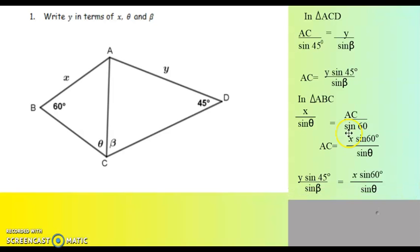So my next step, because AC is equal to AC, it's the same line. So that means that this is equal to this over here. Now I compare the two to each other. And I'm going to write y as the subject of the formula. So here I will multiply with sine of beta over sine of 45 to get rid of both of these. And whatever I do on this side, I must do on this side as well. So I multiply with sine of beta over sine of 45 degrees.